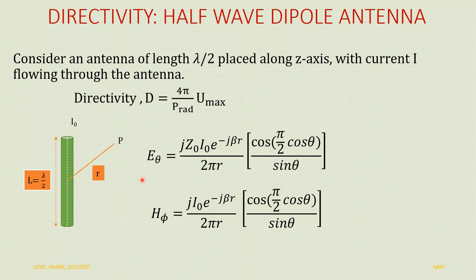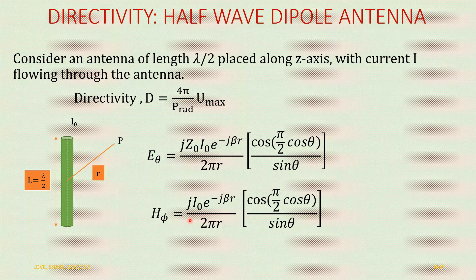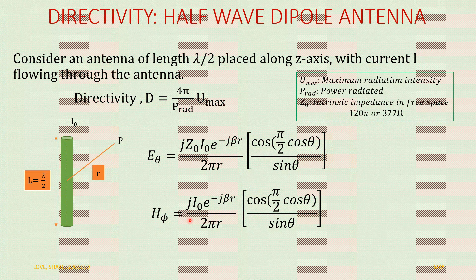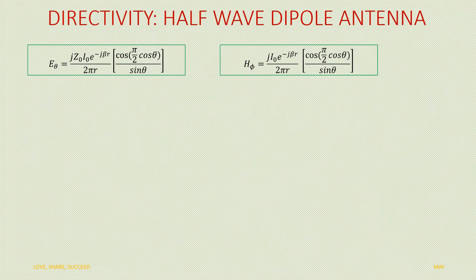H_phi, the magnetic field component in the far field for a half wave dipole antenna, has value j*I0*e^(-j*beta*r) by 2*pi*r, multiplied by cos(pi/2 * cos(theta)) by sin(theta). U_max represents the maximum radiation intensity, P_rad represents the power radiated, and Z0 is the intrinsic impedance in free space, whose value is 120*pi or 377 ohms.